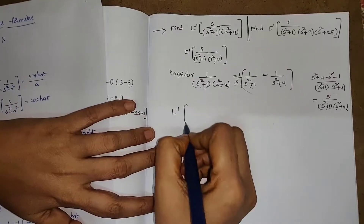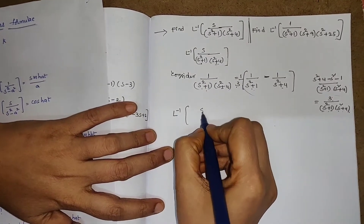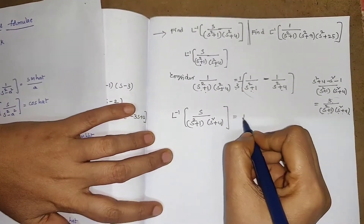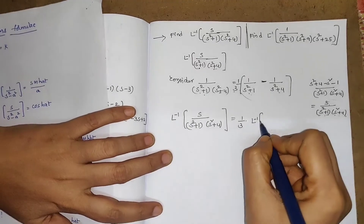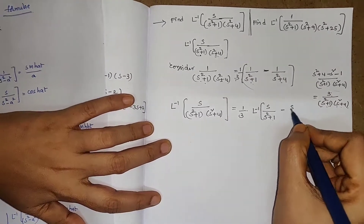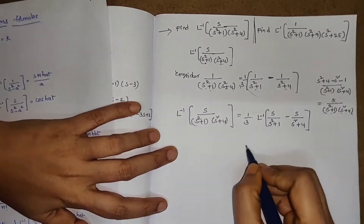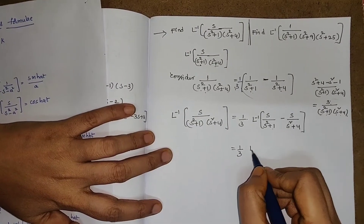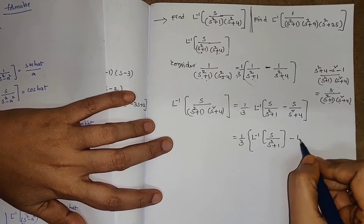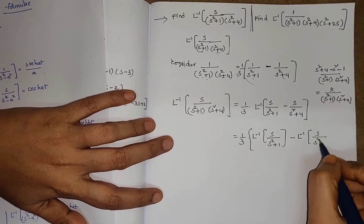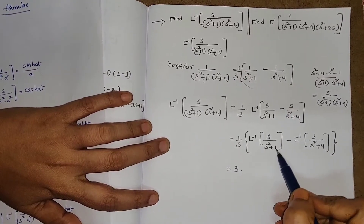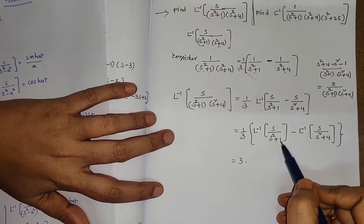Now, L inverse of S / [(S² + 1)(S² + 4)] equals 1/3 times L inverse of [S/(S² + 1) minus S/(S² + 4)]. By the linear property, this equals 1/3 times {L inverse of S/(S² + 1) minus L inverse of S/(S² + 4)}. Recall that S/(S² + a²) is the Laplace transform of cos(at).